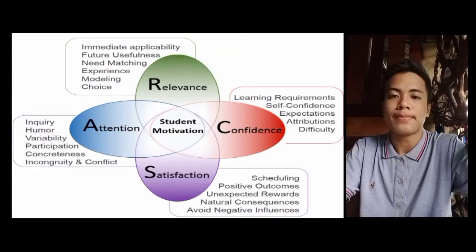A student's motivation involves relevance, immediate applicability, future usefulness, need matching, experience, modeling, and choice. For confidence as a learning requirement: self-confidence, expectations, attributions, and difficulty. For satisfaction: positive outcomes, unexpected rewards, natural consequences, and avoiding negative influences. For attention: inquiry, humor, variability, participation, concreteness, and conflict.